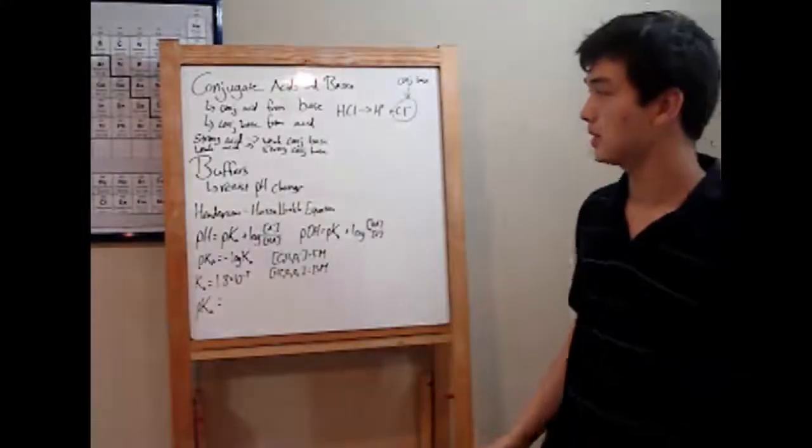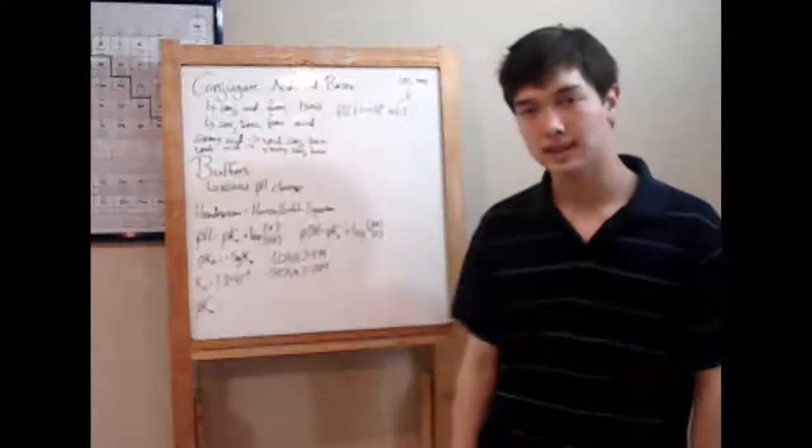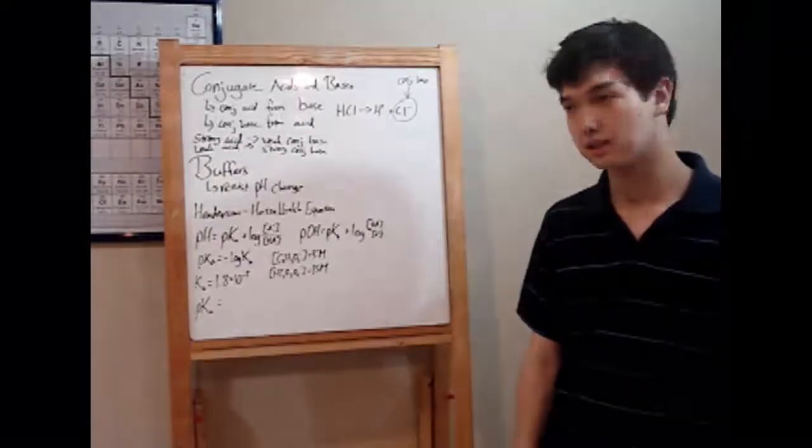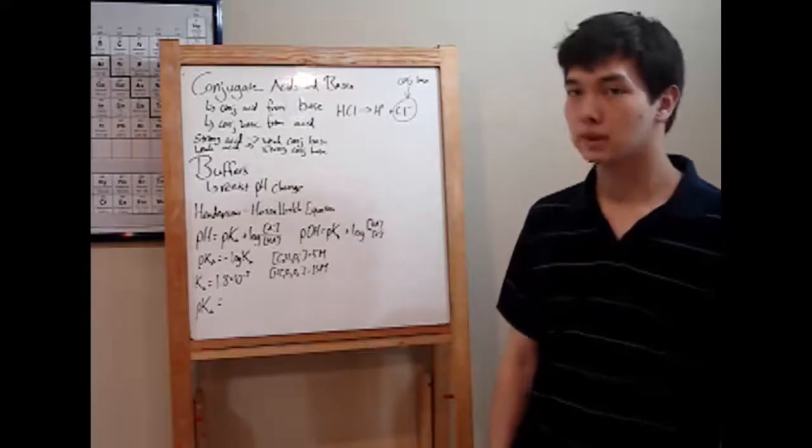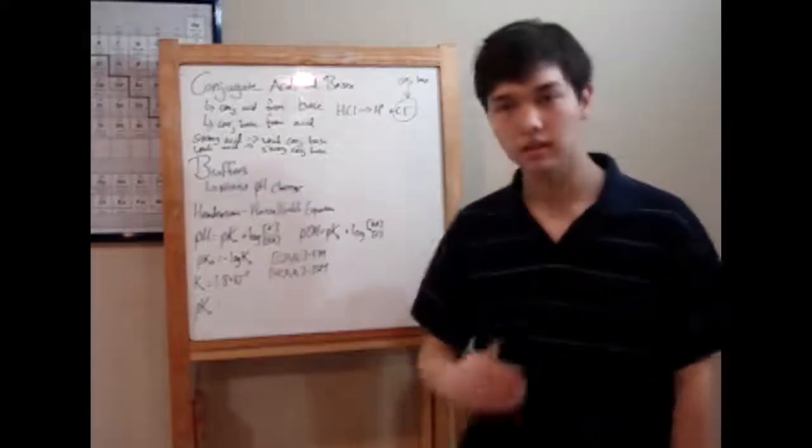Another relationship to know is that strong acids will produce a weak conjugate base, and weak acids will produce a strong conjugate base. The same is true for bases. Strong base, weak conjugate. Weak base, strong conjugate. You'll need to know that relationship.